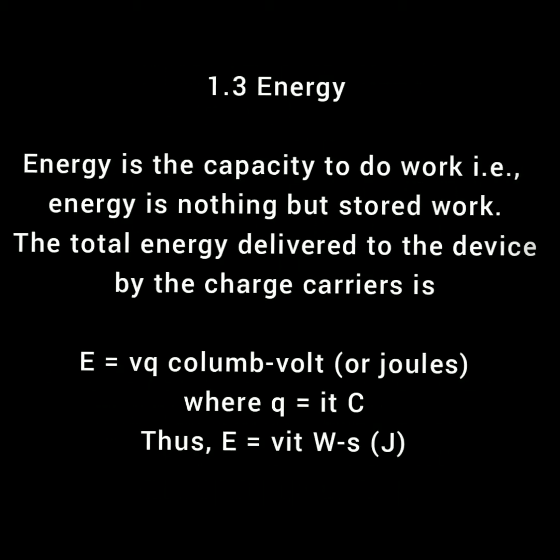Energy is the capacity to do work — that is, energy is nothing but stored work. The total energy delivered to the device by the charge carriers is w = v × q coulomb-volts or joules, where v denotes the potential difference across the terminals and q denotes charge. The quantity of electricity q associated with a constant current i is q = i × t coulombs, thus w = v × i × t watt-seconds or joules.